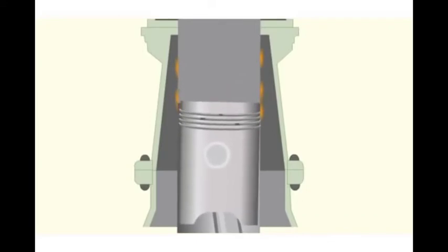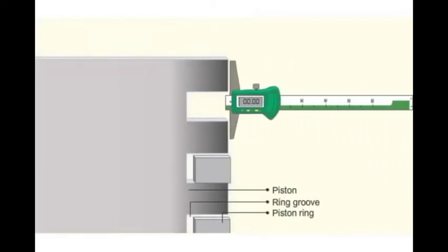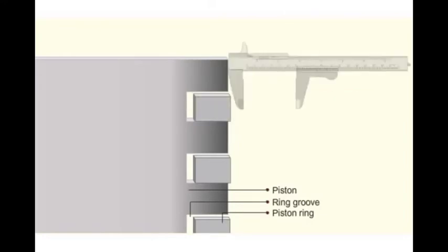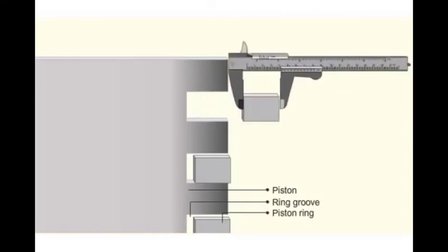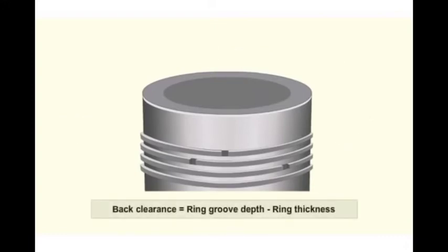To measure back clearance, measure the depth of the piston ring groove by means of the depth gauge. Use vernier caliper to measure the thickness of ring. Take both these measurements in at least six different positions around the groove circumference. The difference between the two readings will give the back clearance. If the back clearance is more than the specified limit, replace the rings.